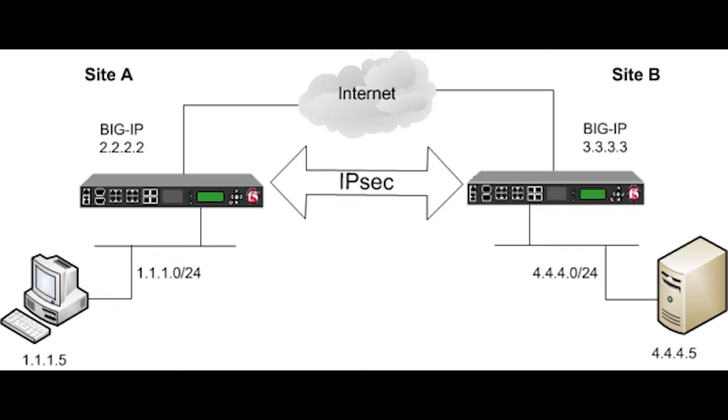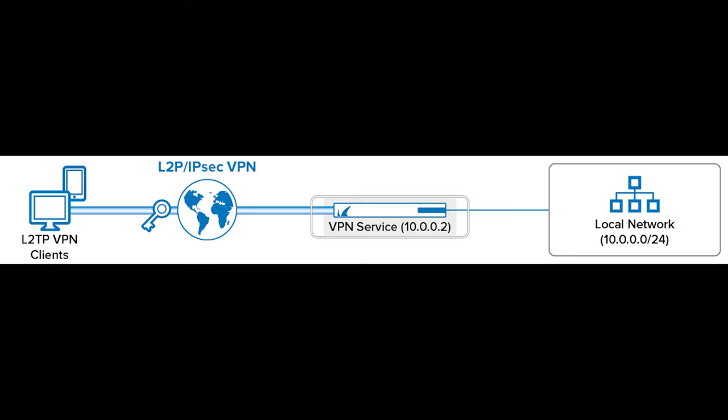L2TP, or Layer 2 Tunneling Protocol, is an extension to the PPP protocol that merges the best features of two tunneling protocols and is used to support VPN. However, it doesn't provide confidentiality or strong authentication by itself. L2TP is often implemented along with IPSec tunneling protocol to secure the connection.